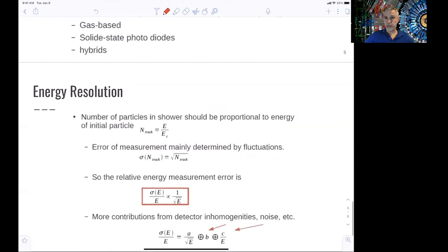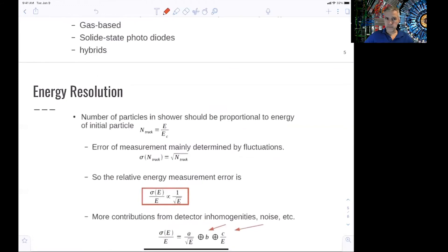The energy resolution in a calorimeter depends on a number of things. As I was saying, one measures the number of particles being produced in a shower, and that's just a counting experiment. The uncertainty scales with the square root of the number of particles produced or measured. So we have a square root n term. The relative energy measurement has an error which is 1 over square root of the energy.